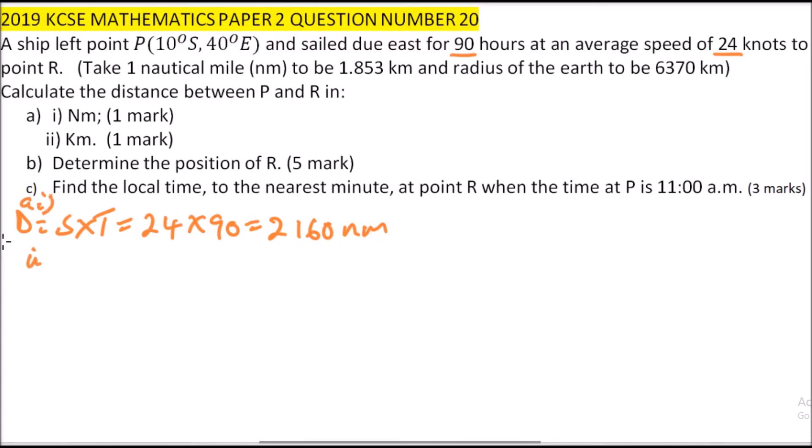Then we come to roman numeral 2. We are supposed to write that in kilometers, and since we have been given that one nautical mile is 1.853 kilometers, we just multiply 2,160 nautical miles multiplied by 1.853, and when you multiply that, you get 4,002.48 kilometers. So that is how we get the distance PR in kilometers.